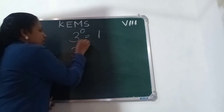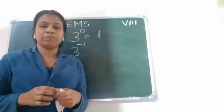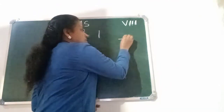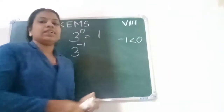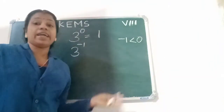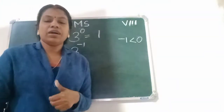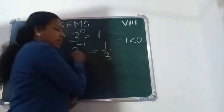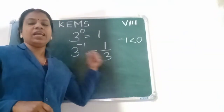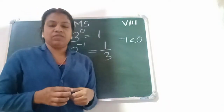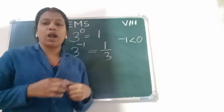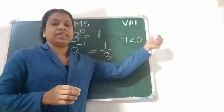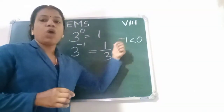What about 3 raised to minus 1 — negative 1? Negative 1 is less than 0; it is an integer. So, 3 power minus 1 equals 1 by 3, because the exponent is less than 0.